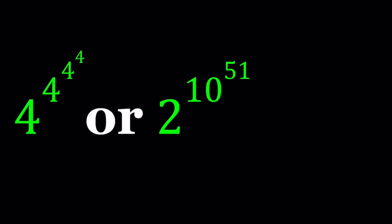Hello everyone. In this video we're going to be comparing two numbers. This is a homemade comparison problem where we have 4 to the power 4 to the power 4 to the power 4 — we have four 4s — and we're comparing it to 2 to the power 10 to the power 51. These are very large numbers. I'm going to show you some screenshots from Wolfram Alpha to give you an idea about these numbers. They're very large, but at least you'll see what they look like, sort of.